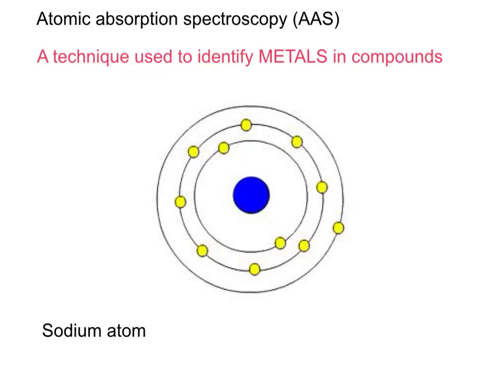This is a short overview of Atomic Absorption Spectroscopy, AAS. Please remember it's only used to identify metals in compounds.